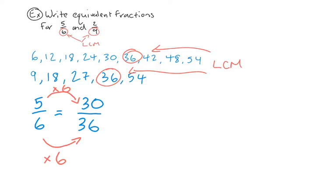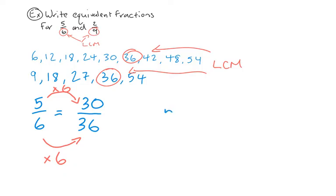You might be wondering how I got the multiplier of 6. You need to be familiar with your times table to know that 6 times 6 is 36 and 5 times 6 is 30. If you're not confident with your times table, you're more than welcome to use a calculator. So 5 over 6 is equal to 30 over 36. Even though they do not look alike, they are actually equivalent fractions.